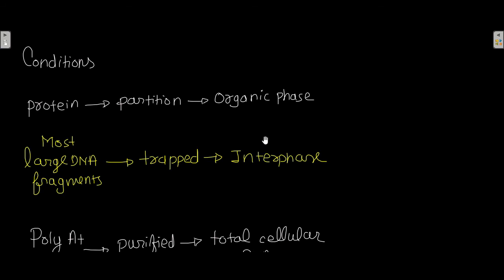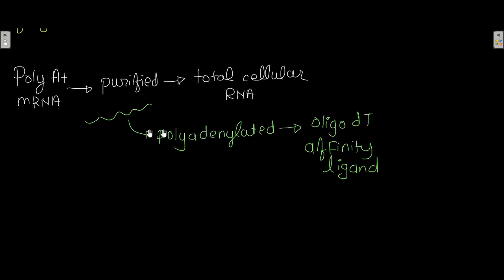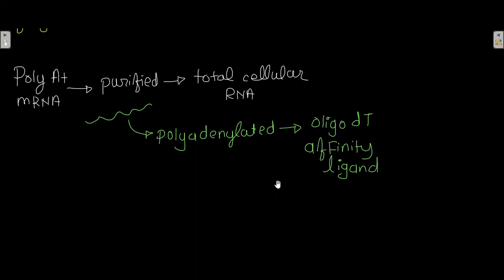The RNA is thereby separated in the aqueous phase, and then poly-A plus mRNA is purified from the total cellular RNA using polyadenylated oligo-dT affinity ligands. This is how the purification of mRNA is done.